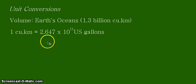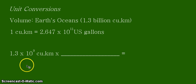Okay, now we do our skeletal form of the solution. So, we have transformed 1.3 billion cubic kilometers into the scientific notation form. That's 1.3 times 10 raised to the power of positive 9 cubic kilometers. So, we need here our conversion factor, and we get that from this equivalent statement here. So, 1 cubic kilometer is 2.647 times 10 to the positive 11 U.S. gallons.